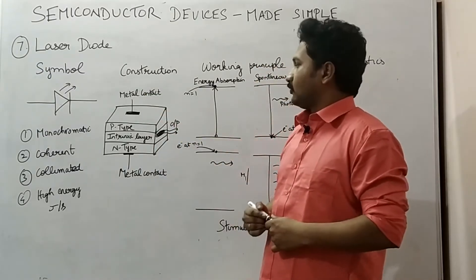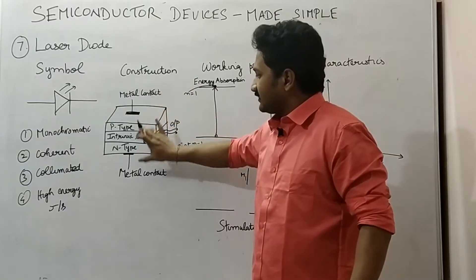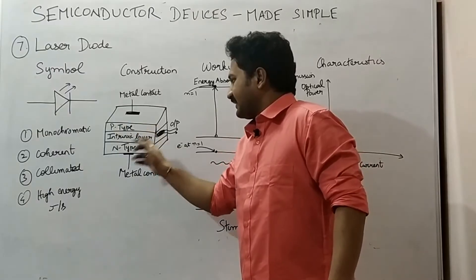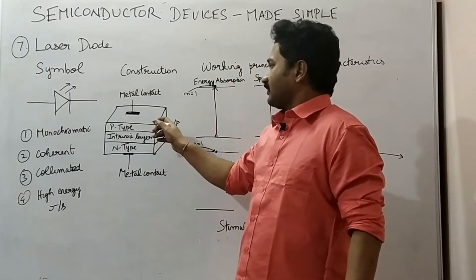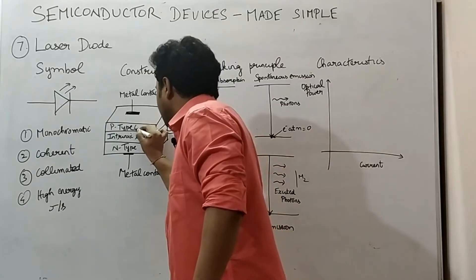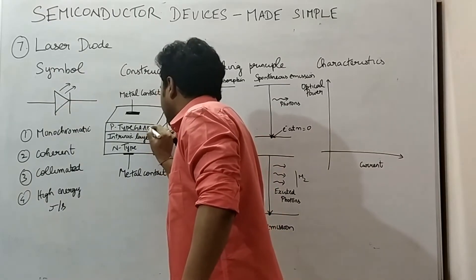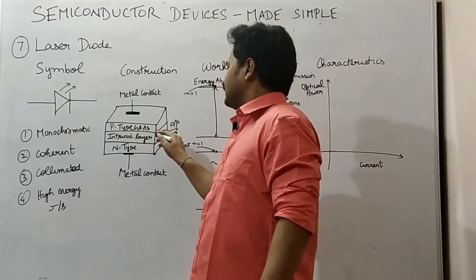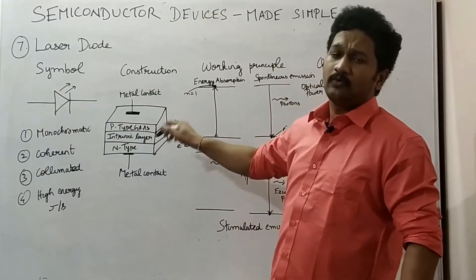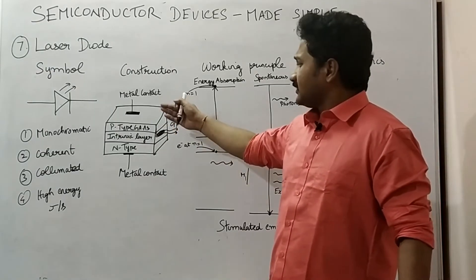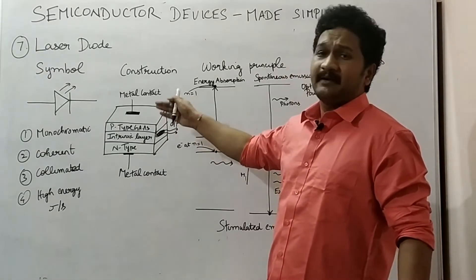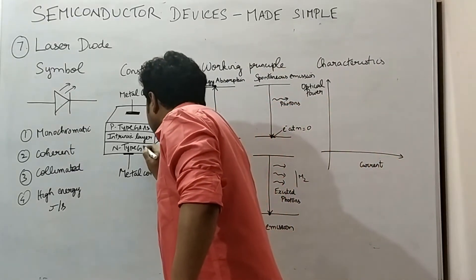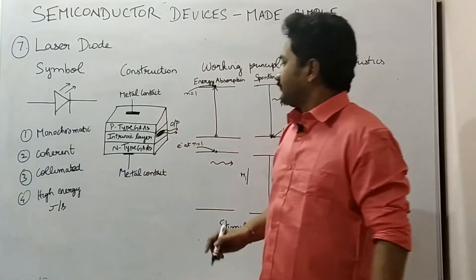Next is the construction of the laser diode. Here you can see some of the important parts that make up a laser diode. The first one is a metal contact available at both ends of the laser diode. Next is the p-type material, which is made up of gallium arsenide. Next is the intrinsic layer, which is called a homojunction layer.